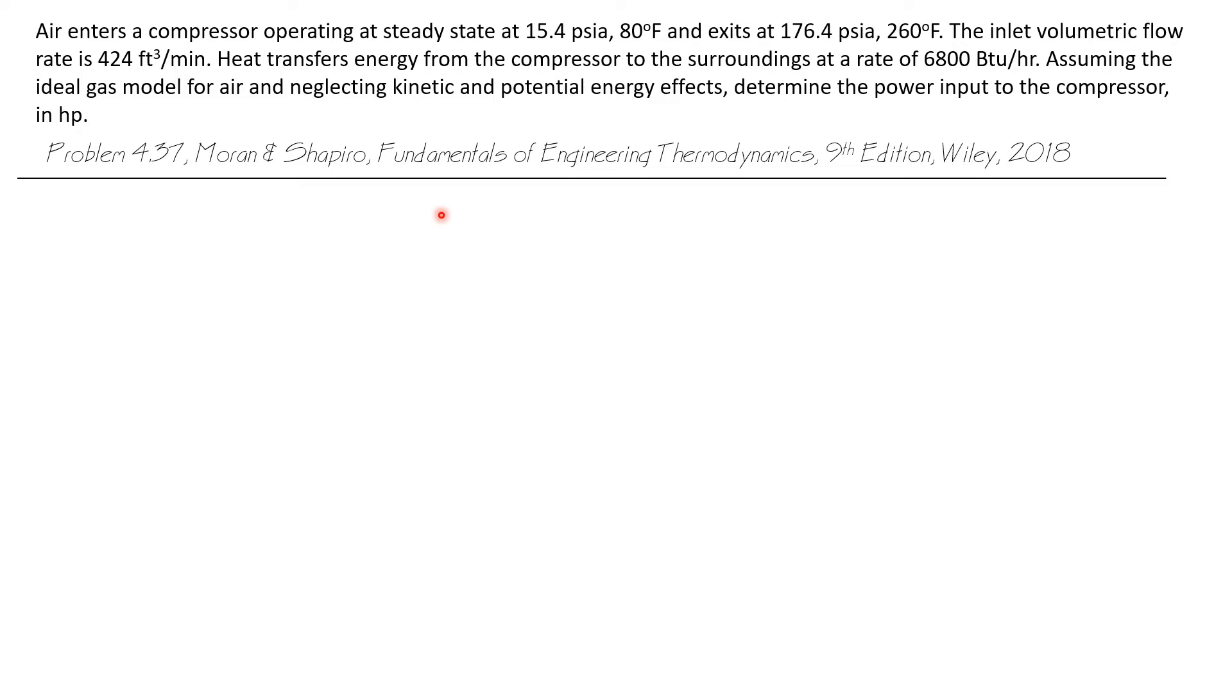Heat transfers energy from the compressor to the surroundings at a rate of 6,800 BTUs per hour. Assuming the ideal gas model for air and neglecting kinetic and potential energy effects, determine the power input to the compressor in horsepower.